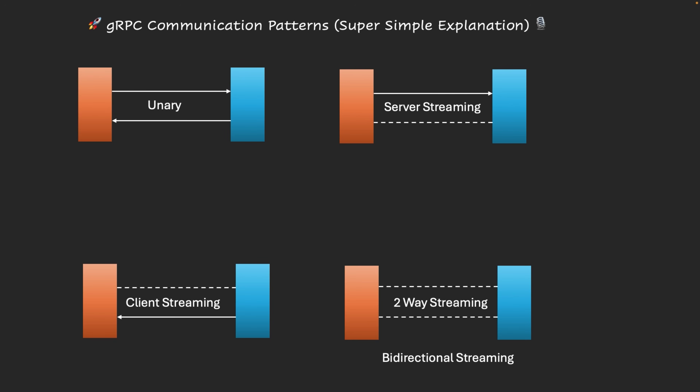Let's understand these communication patterns in detail. Unary means one request, one response — the client sends one request and the server sends one response back, just like a normal REST API call. In server streaming, the client sends one request but the server keeps sending multiple responses. No need for the client to keep asking for updates.